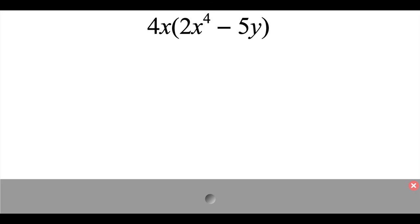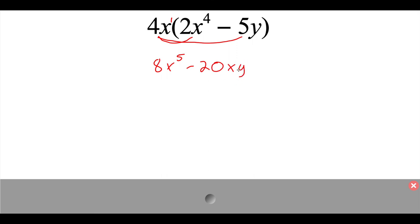Now sometimes as we're looking at doing things with polynomials, they don't always have the exact same variable in there. So here we've got 4x and we're multiplying that by 2x to the 4th minus 5y. We have an x variable and a y variable in there. When I do my distributive property and go 4x times 2x to the 4th, 4 times 2 is 8, and x times x to the 4th — I add those exponents together, so I get x to the 5th. Now when I take this 4x and multiply it over to the negative 5y, things are a little different because we've got two different variables. I'm still going to take 4 times negative 5 to get negative 20, but I can't take x times y because those are different variables. So I'm just going to write it as negative 20xy, meaning negative 20 times x times y. We can't put the x and the y together because those are two separate variables.